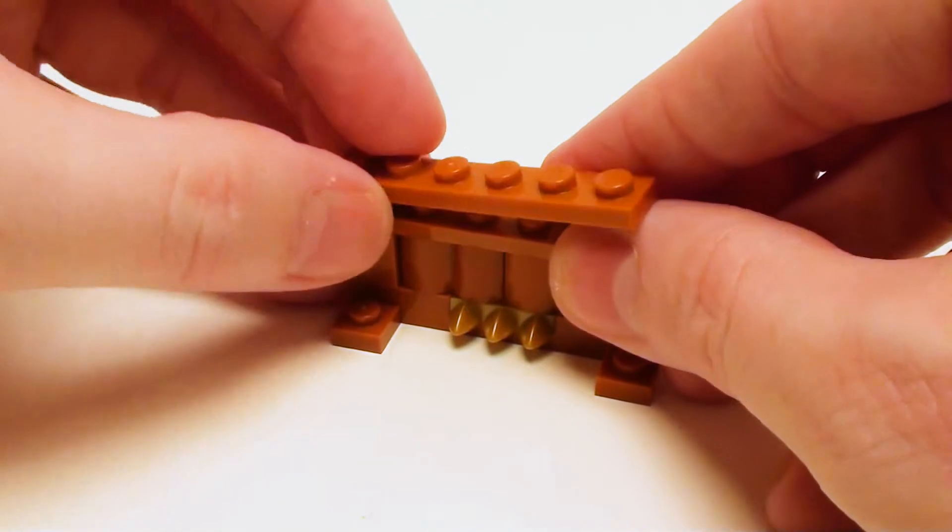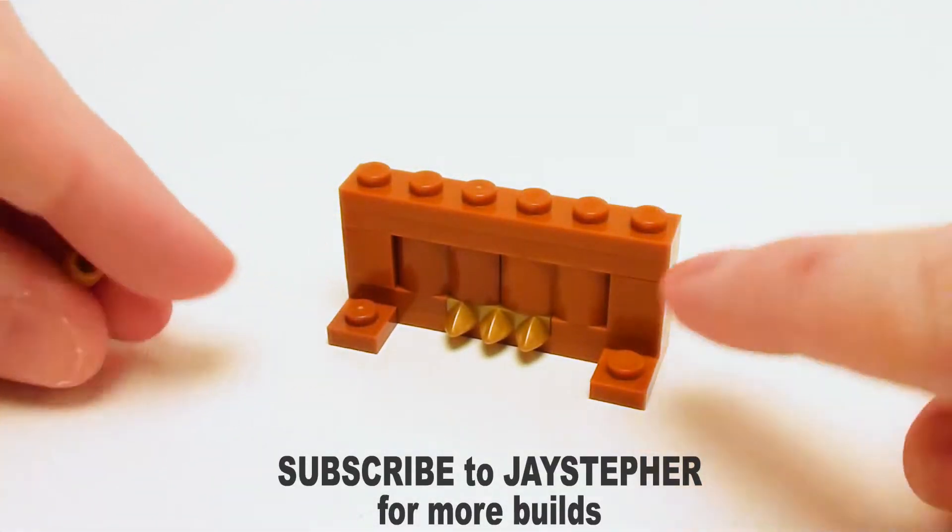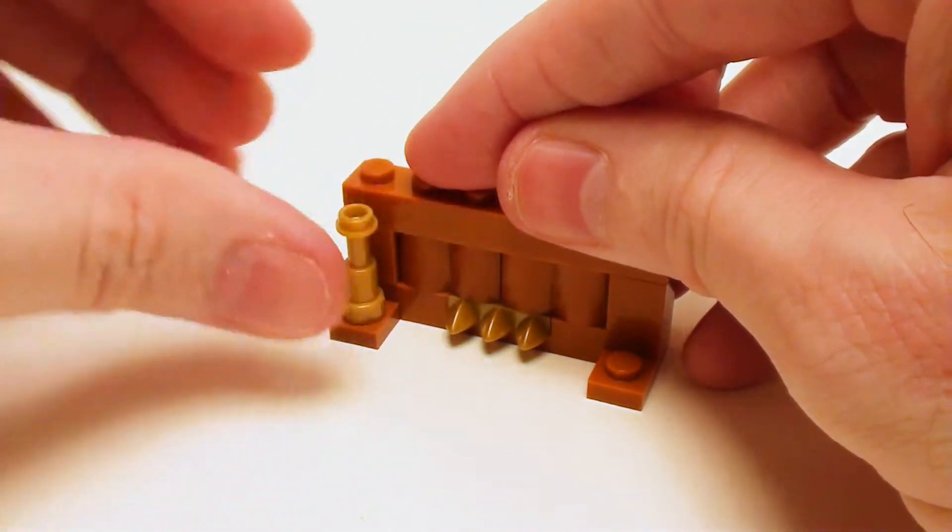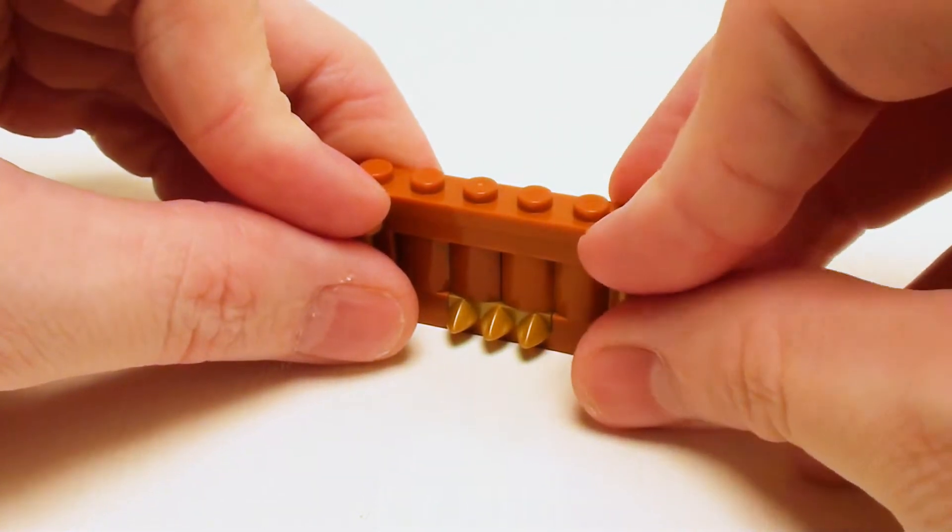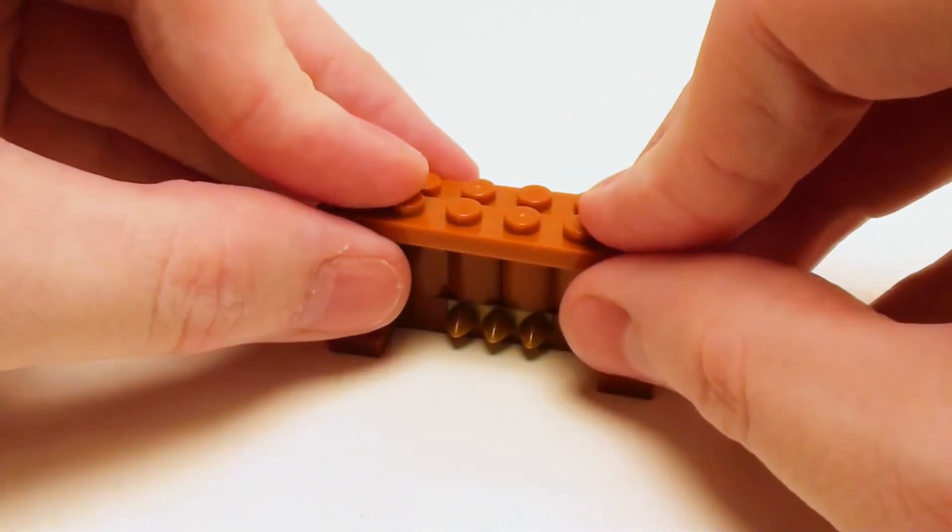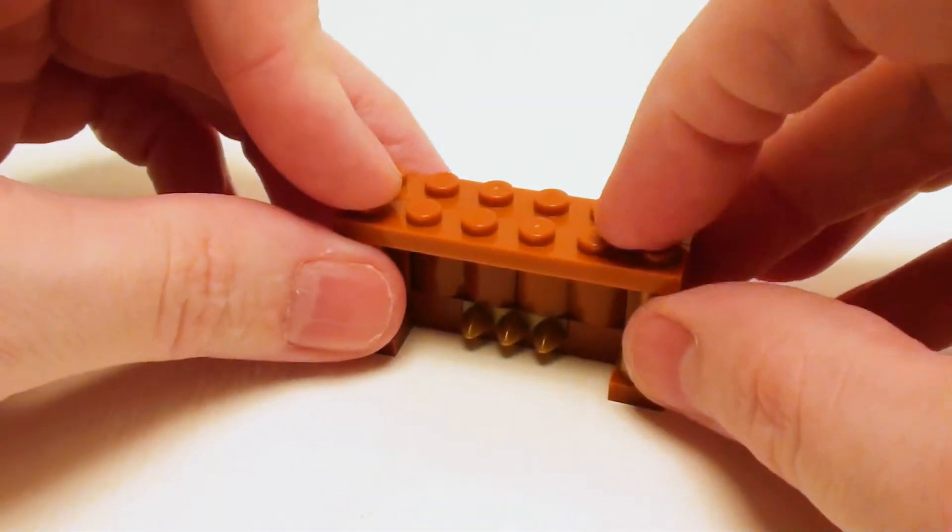let's place a pair of 1 by 6 plates on top of one another. And in this area, two 1 by 1 telescope pieces. And crown off the telescope pieces with a 1 by 6 plate. We're going to have to wiggle that in to line everything up.